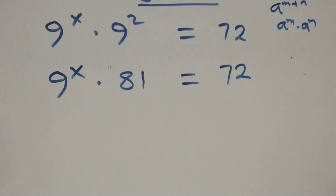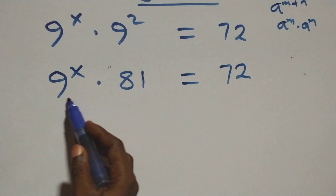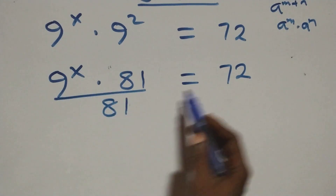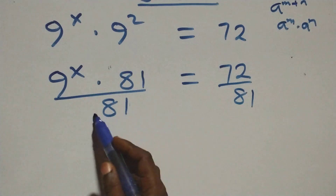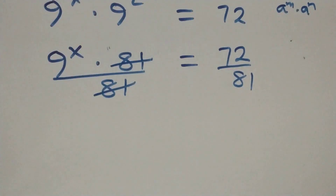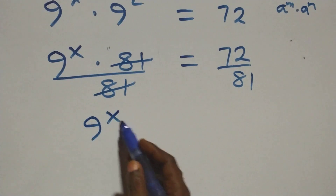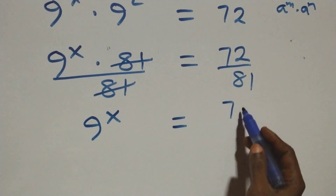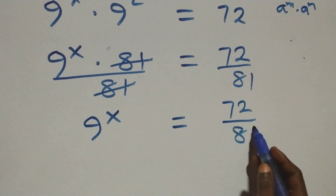The next step here, we divide both sides by 81. Divide this side by 81, also divide this side by 81, which implies 81 cancels each other, and we have 9 raised to power x equals 72 over 81.